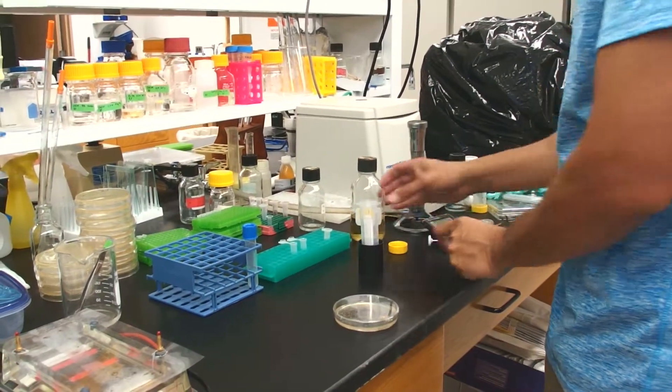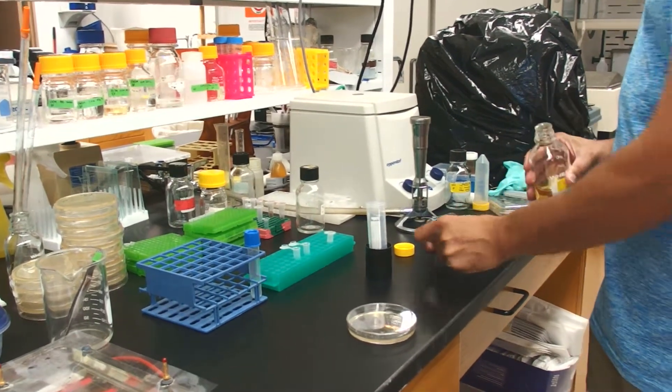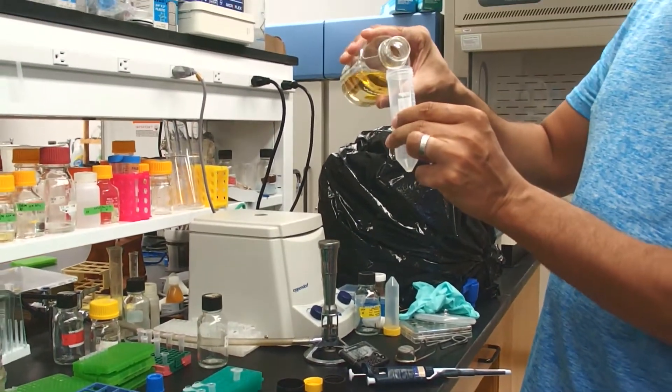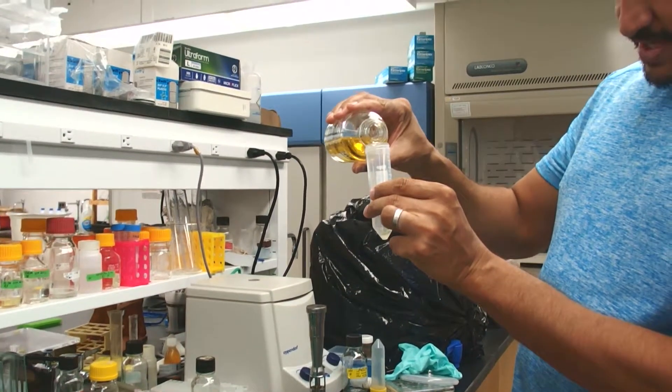I'm going to inoculate a few mini preps that's going to require 6.4 milliliters of LB and spectinomycin. I'm going to make just a little bit extra. It's always good to have just a little bit extra.